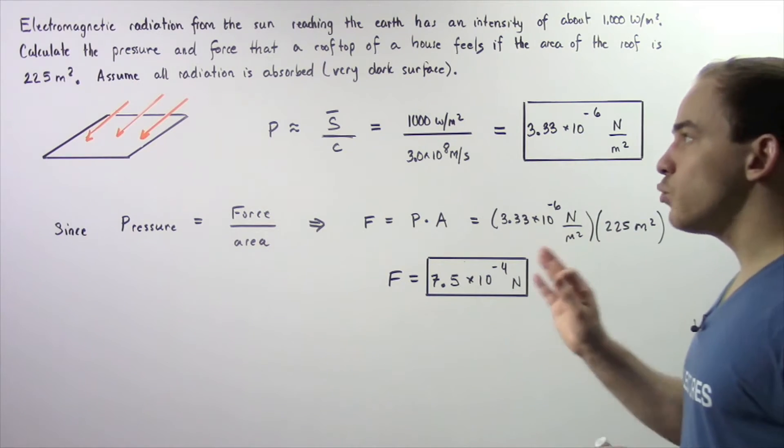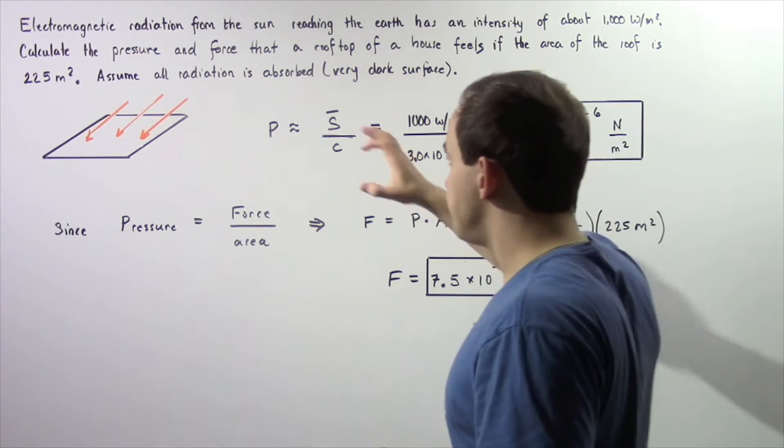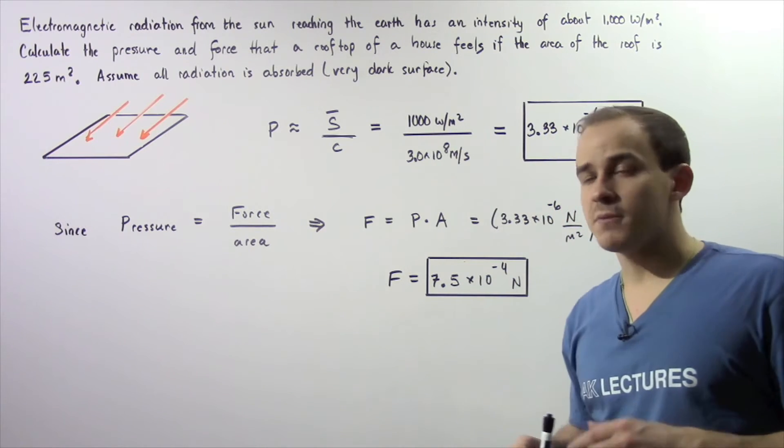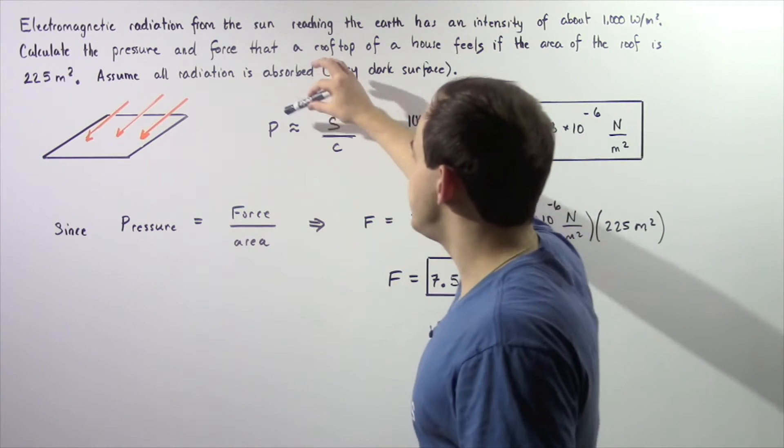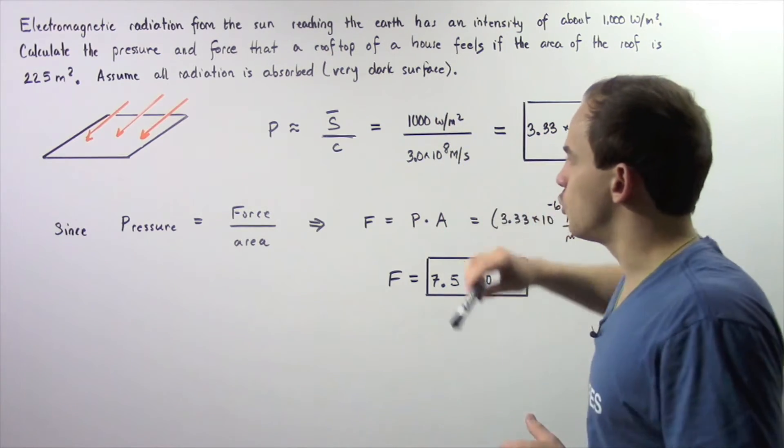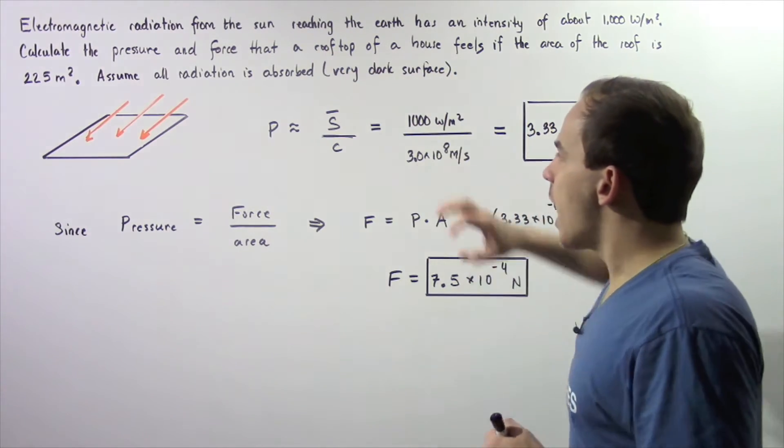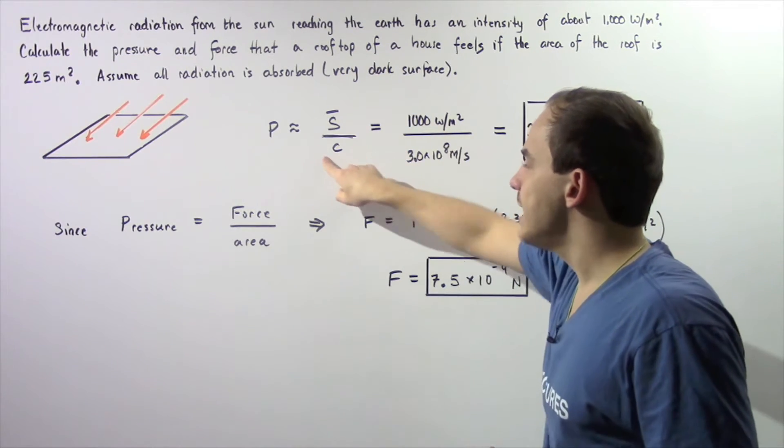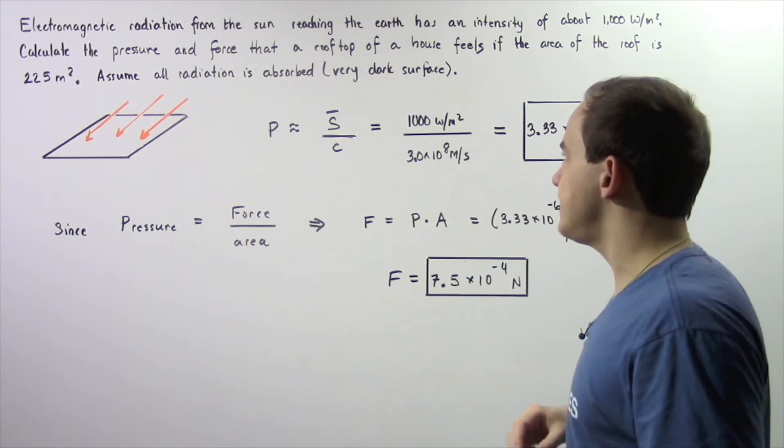Because we're making this assumption, according to the equation derived in the previous lecture, the radiation pressure is approximately equal to the ratio of our Poynting vector divided by the speed of light c.